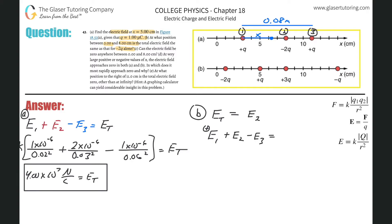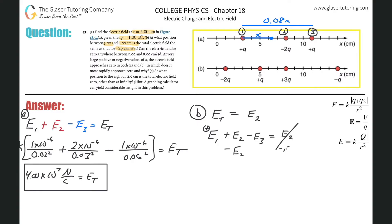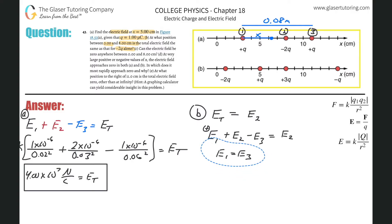E2 cancels from both sides — subtracting E2 from both sides gives zero, not one, since it's subtraction. So we're left with E1 minus E3 equals zero, which means E1 equals E3.